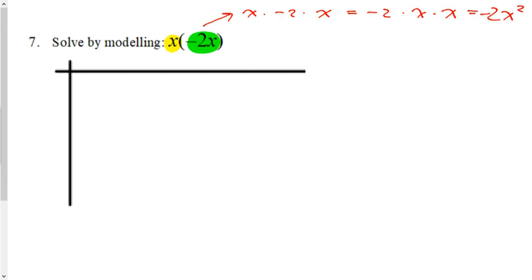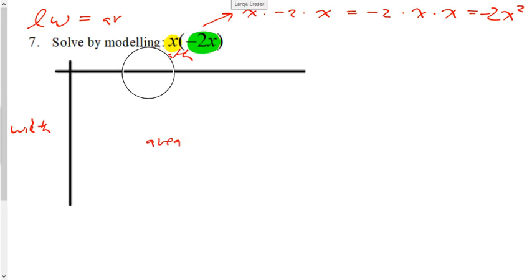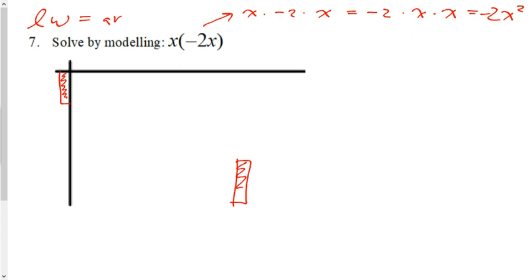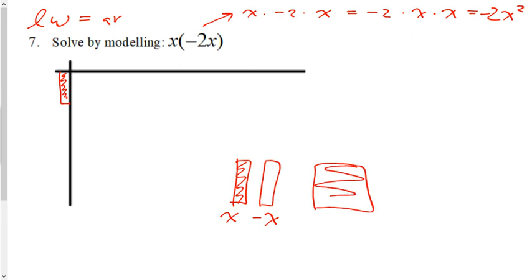We can take that same idea and use an area model, because it's a monomial times a monomial — we can think of it as length times width equals area. Remember the algebra tiles: this is an x, this is a negative x, this is an x squared, this is a negative x squared, this is a 1, and this is a negative 1. Press pause and copy those down if you need to — those are the basic algebra tiles.